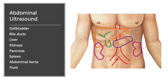The kidneys on both sides, which are the bean-shaped images on this diagram, are also assessed well with ultrasound. We can look for masses, kidney stones, or blockages of flow of urine within the kidneys.